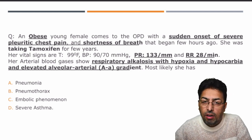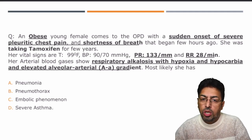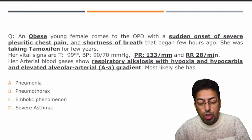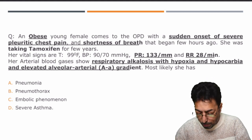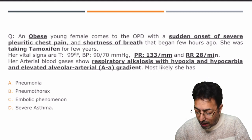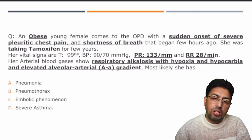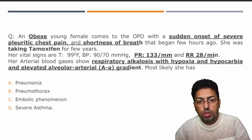How to arrive at a diagnosis and how to answer this question — that is very important. As I mentioned, she is an obese lady with sudden onset of pleuritic chest pain and shortness of breath, tachypnea and tachycardia, with a history of Tamoxifen intake. Lab values show hypoxia, hypocarbia, and increased alveolar-arterial gradient. These are in a nutshell the standard points. For an intelligent student, this is more than enough to answer this question.